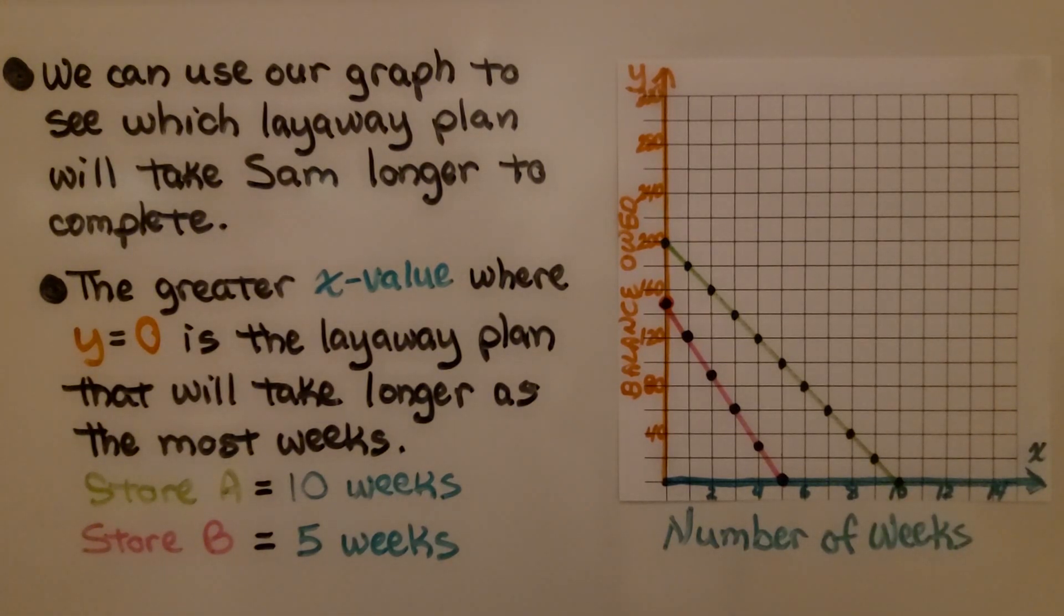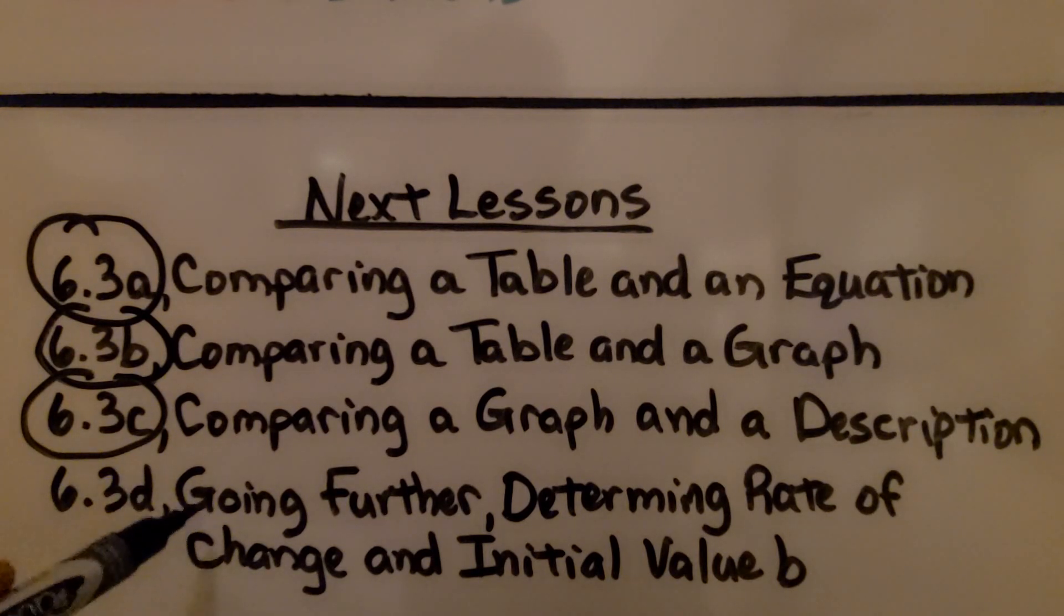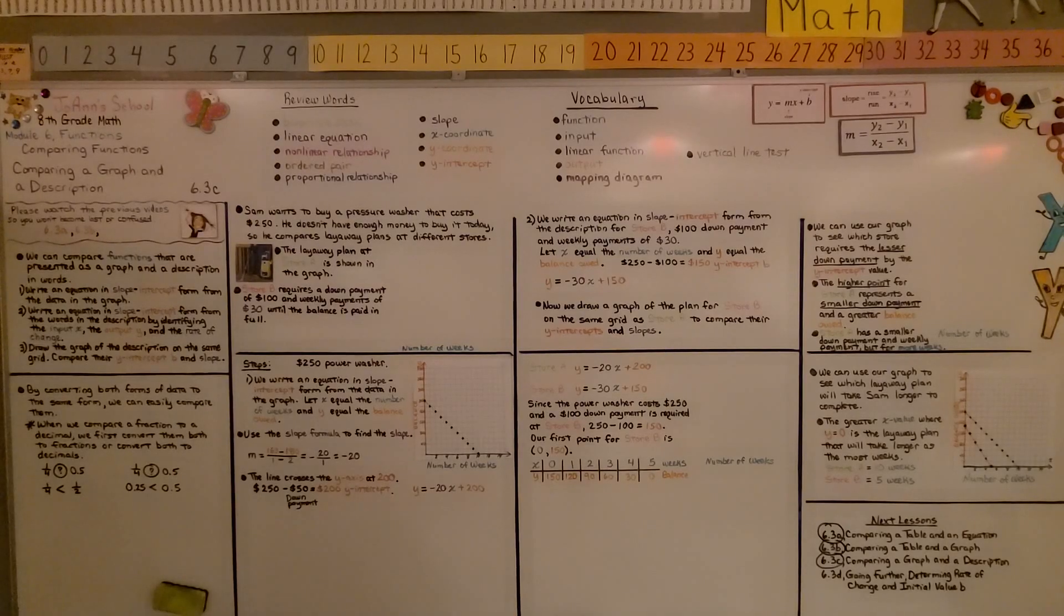By drawing both equations as lines on the same grid, we can easily compare them. We're finished with 6.3C. We're moving on to D, which is the going further at the end of the lesson, and it's determining rate of change and initial value B. Please join me for the last part of the lesson, and have a great day.